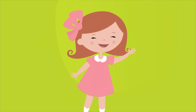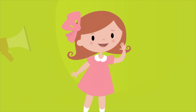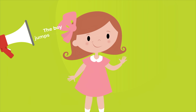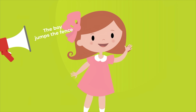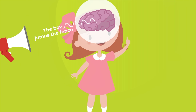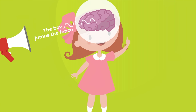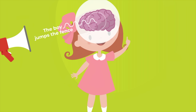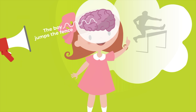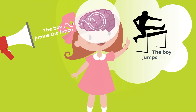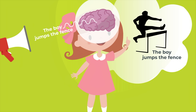In a normal individual, if the statement 'the boy jumps the fence' is verbalized, the auditory cortex of the brain correctly processes the sound and the person comprehends the statement: 'the boy jumps the fence.'